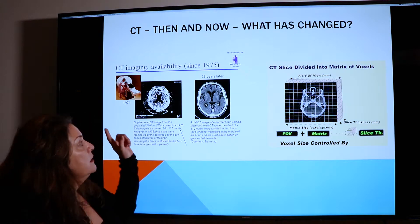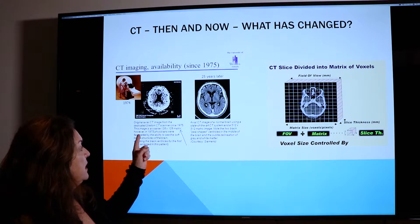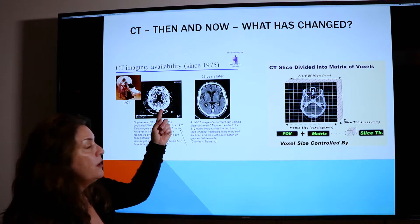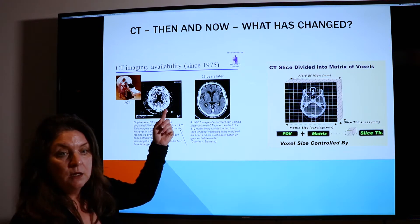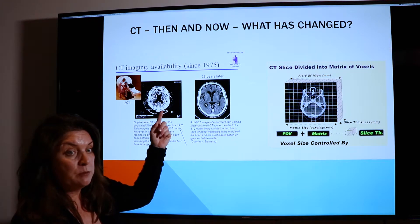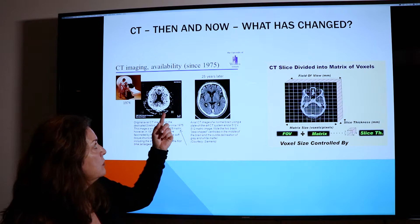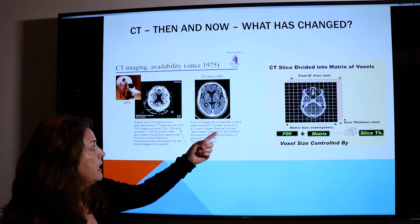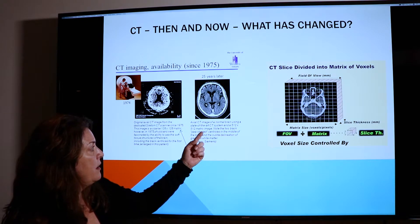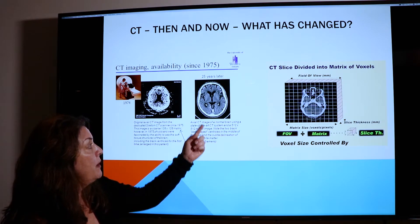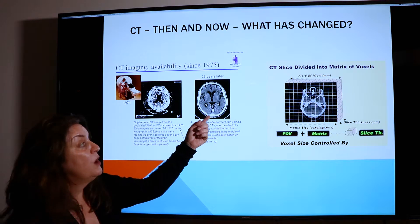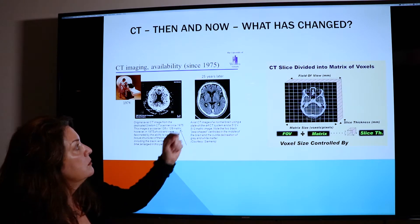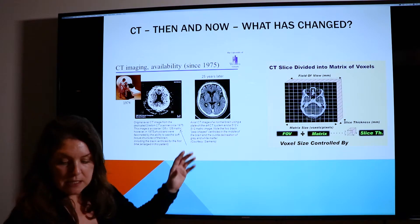Years ago in CT, in 1975, this is what the image looked like. It's very pixely because there aren't very many pixels in the matrix. As opposed to 25 years later, where we have a 512 by 512 matrix, and you see much, much better resolution. We'll get into CT later.